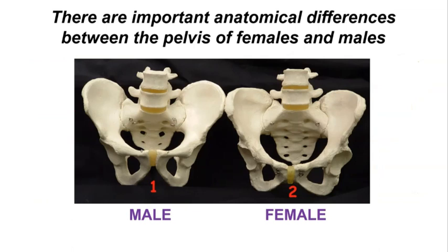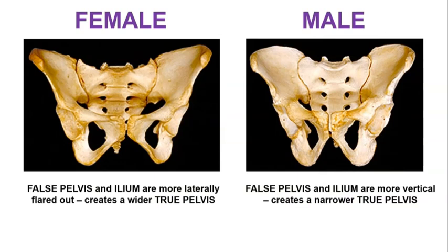There are important anatomical differences between the male pelvis, on the left in this diagram, and the female pelvis, on the right. In the female pelvis, the anatomy maximizes the size of the true pelvis to aid in childbearing. The false pelvis and the ilium are more laterally flared out, which helps to create a wider true pelvis in the center, whereas in males the false pelvis and the ilium are more vertically oriented, creating a narrower true pelvis.